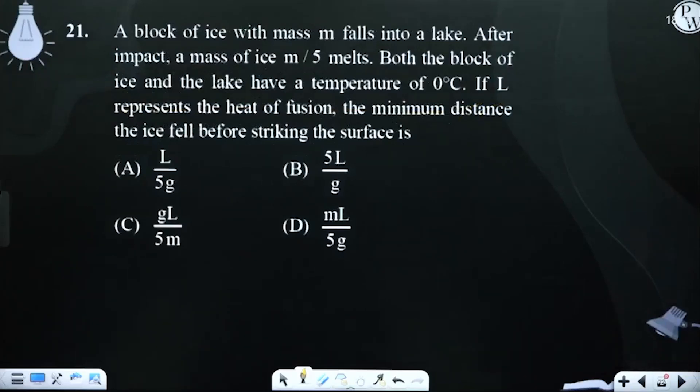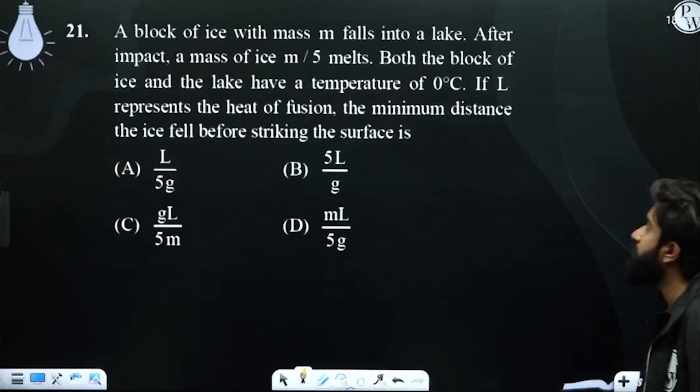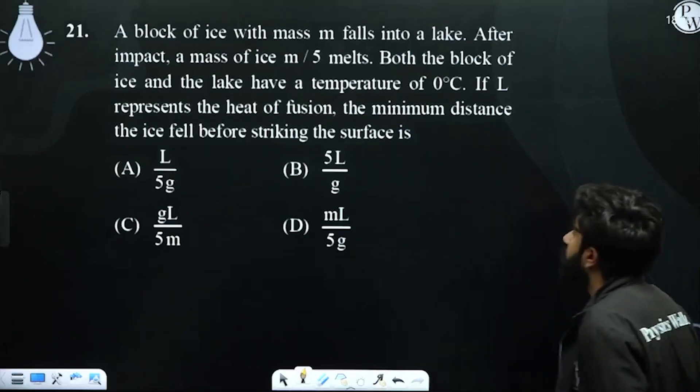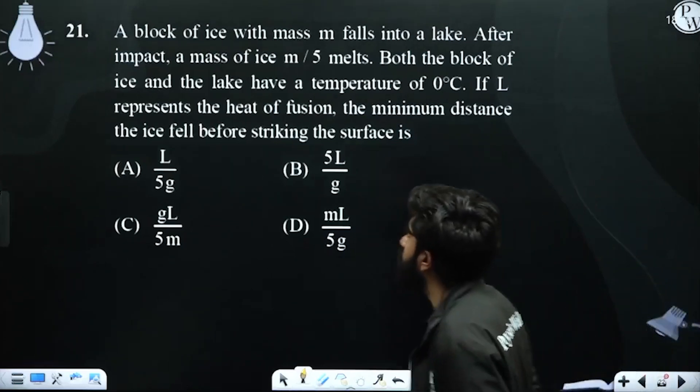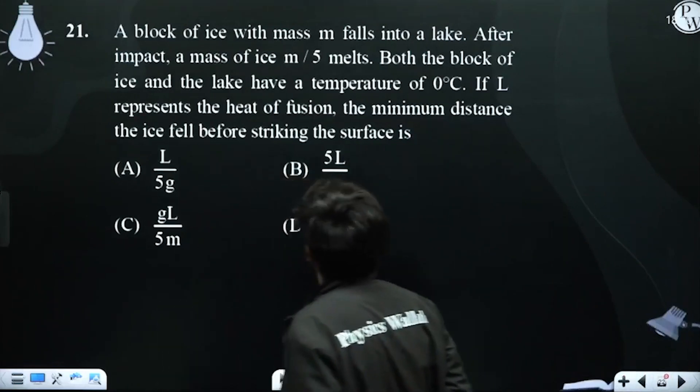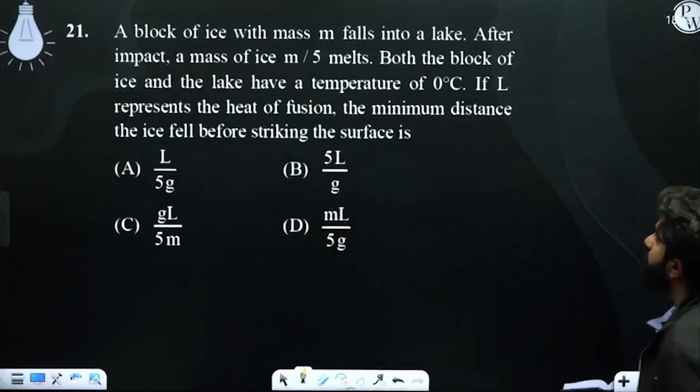A block of ice with mass m falls into a lake. After impact, a mass of ice m/5 melts.